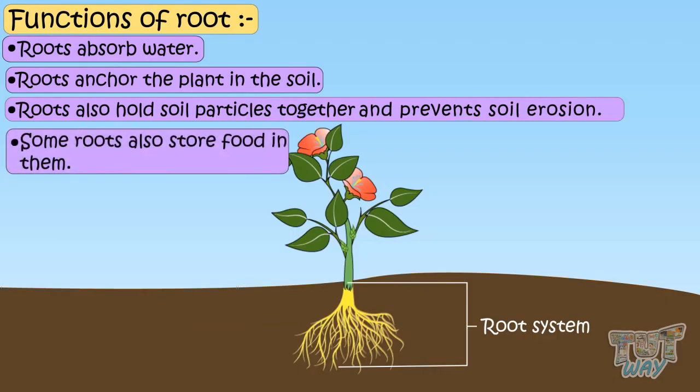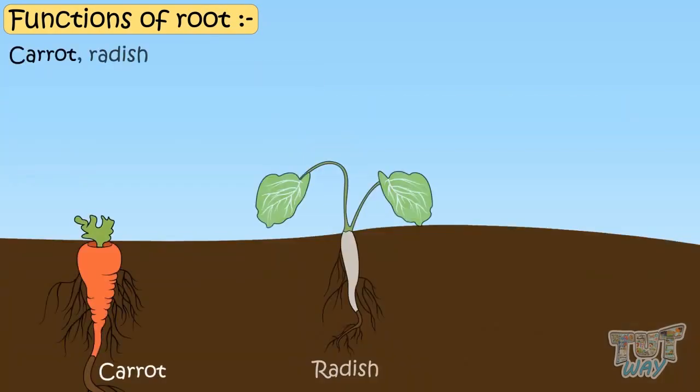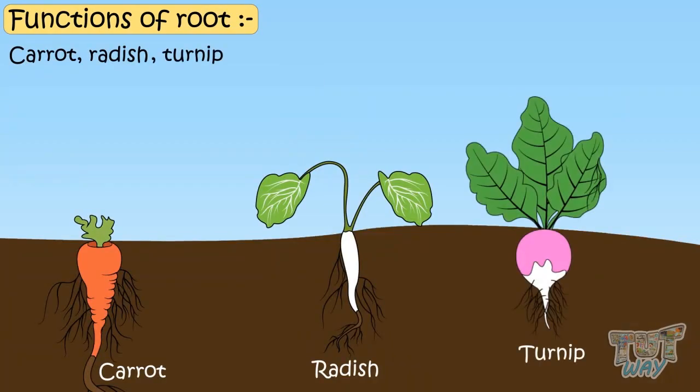Some roots also store food in them, like carrots, radish and turnips are tap roots that we eat.